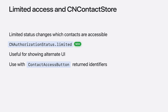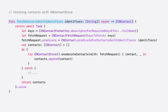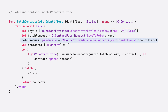Here is a function that takes in an array of contact identifier strings and returns the CN Contacts that those identifiers represent. To avoid blocking the main actor, I perform the fetch in a task that I await. Within the task, I first create a CN Contact fetch request where I list out the keys for the contact fields I want to fetch. In this example, I only fetch the fields required for showing contact names. To fetch contacts by their identifiers, I use CN Contact predicate for contacts with identifiers. After that, I use CN Contact Store's enumerate contacts with and collect the results into an array.